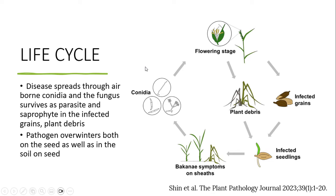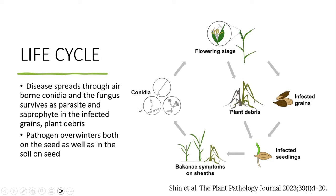Regarding the life cycle, the pathogen mainly overwinters in seed or plant debris. Primary infection is mainly through seed and plant debris. The disease spreads through airborne conidia, and the fungus survives as a parasite in infected grains and plant debris. Overwintering perpetuation is mainly through seed.